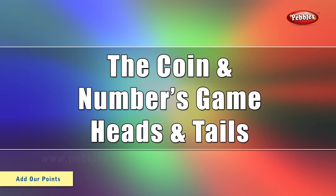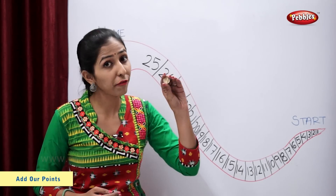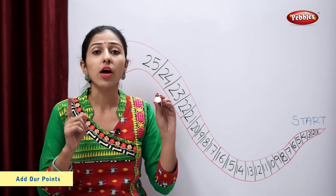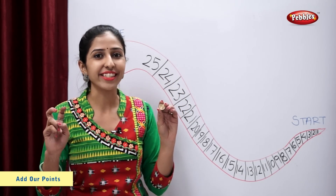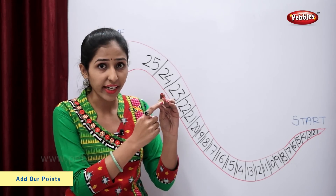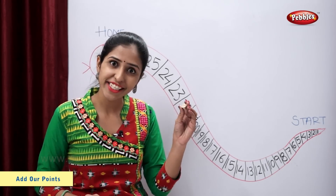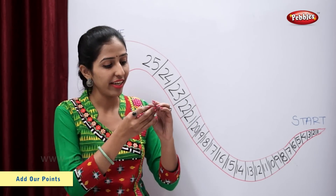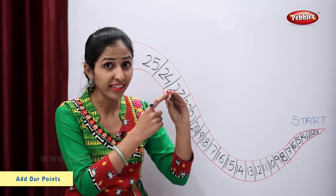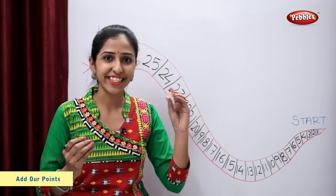The coin and numbers game: heads and tails. You must have seen a 5 rupee coin. It has two sides. On one side, it has heads. On the other side, it has tails.